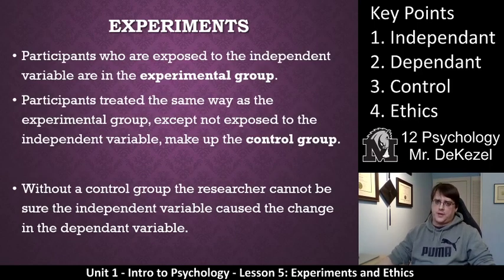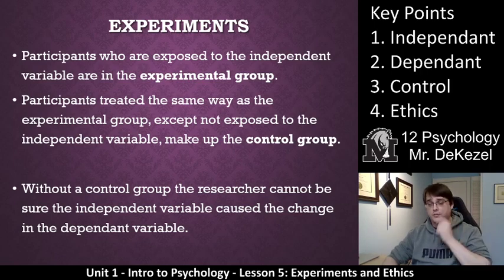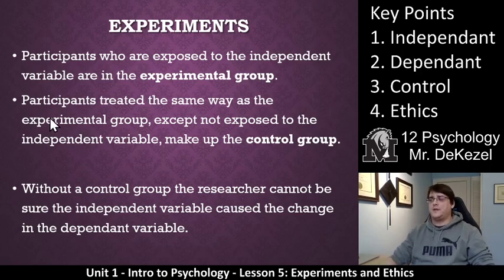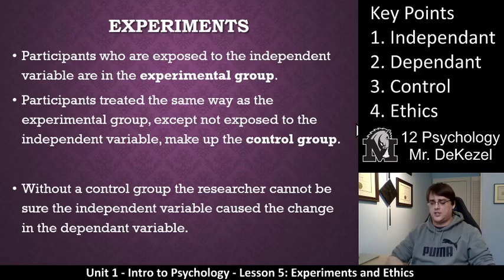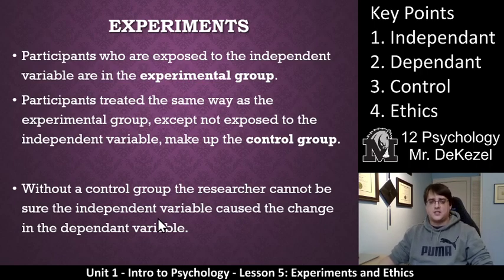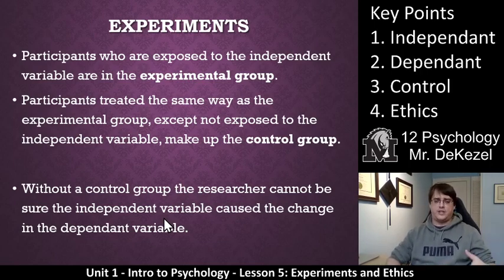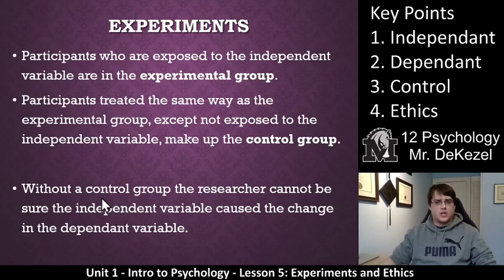Participants are placed into two different groups. Participants exposed to the independent variable are in the experimental group — these are the ones the experiment is performed on. Then we have the control group: participants treated the same way as the experimental group, except they are not exposed to the independent variable. Without a control group, the researcher cannot be sure the independent variable caused the change in the dependent variable. If only the independent variable has changed, we can attribute the effect to it.